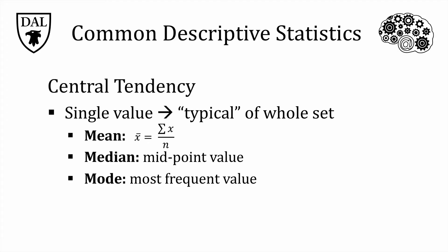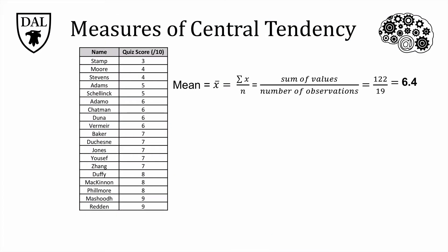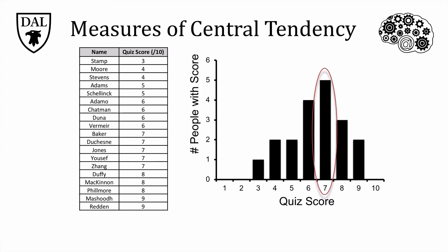Let's look at these measures of central tendency in our quiz scores. By adding up all the numbers and dividing by n, the number of quizzes, our mean works out to 6.4. Note that not one of the students actually scored a 6.4, since it wasn't a possible value, but it does give us a sense of how the group did as a whole. The median is 7, because if you arrange the values from smallest to largest, 7 is in the middle — there are 9 values less than 7 and 9 values more than 7. The mode is also 7, because it is the most frequently occurring score; five students got a 7. This gives us a very similar idea to what we saw in the frequency distribution, which told us that the scores centered around 7.